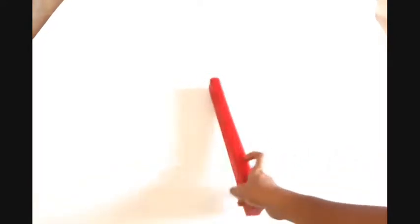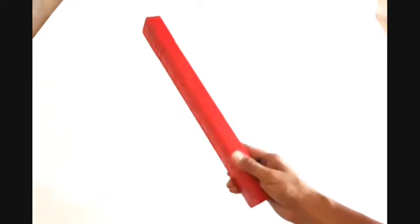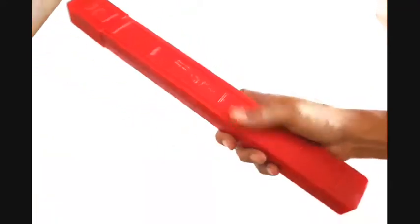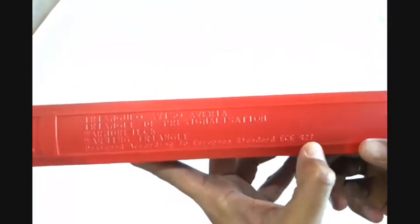So here we have our version 2 of the early warning device. This is quite nice because it is patterned according to European standard. And here you can see it, European standard ECE R27.